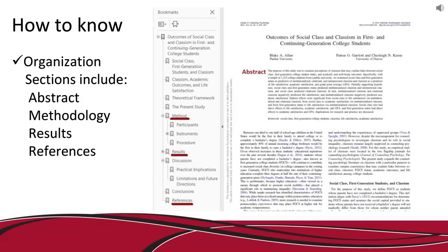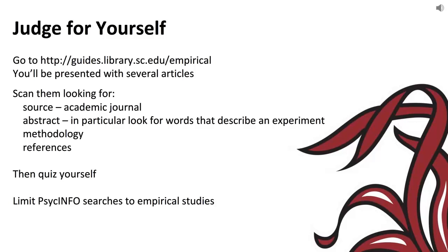You should also expect to see a reference list of other sources at the end of the article. Now it's your turn. Go to guides.library.sc.edu/empirical. Scan the few articles that are posted and look for the clues we covered. Then quiz yourself on whether each article qualifies as empirical and something you would want to cite in your own research paper. The web page also has a short video on limiting searches in PsycInfo to find only empirical studies.